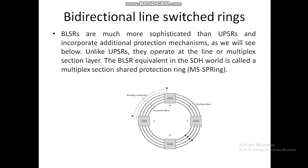Now, if we talk about bidirectional line-switched rings — BLSR — they are much more sophisticated than unidirectional path-switched rings and incorporate additional protection mechanisms. Unlike UPSR, they operate at the line or multiplex section layer. The BLSR equivalent in the SDH world is called a multiplex section shared protection ring, i.e., MSSPRING.